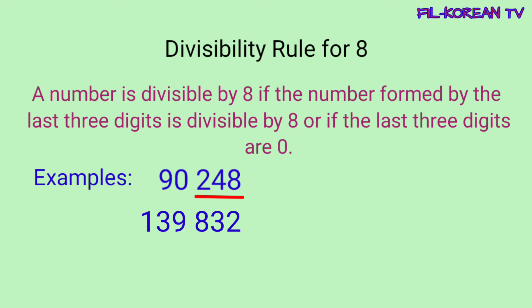Next example: 139,832. Ang last 3 digits, yung number na nabuo nila ay 832. Ang 832 ay divisible by 8. So, yung given number na 139,832 ay divisible by 8.